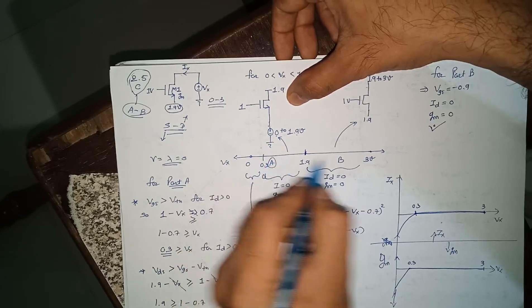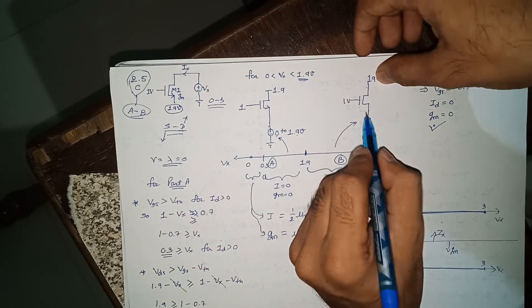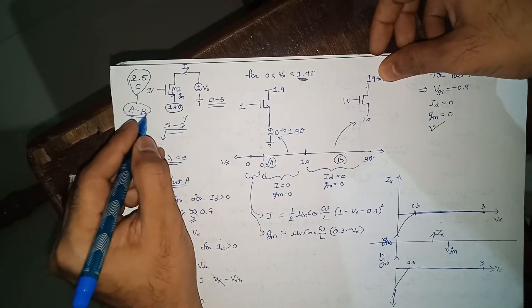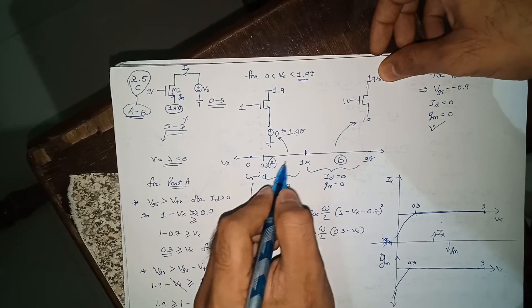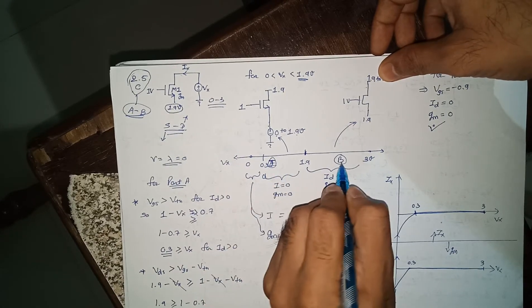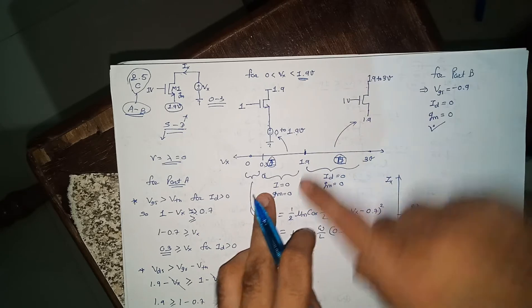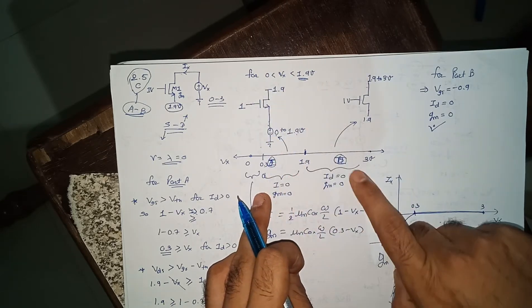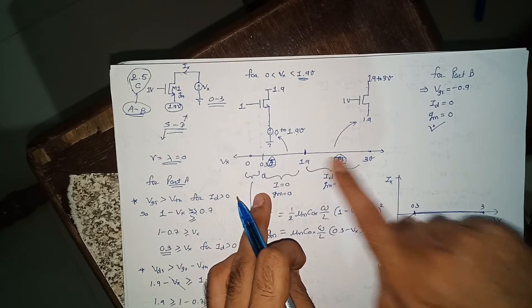Don't confuse between this part abc and this part. I'm just changing it to part i and part double i. Part i means from 0 to 1.9 and for double i it's like 1.9 to 3.